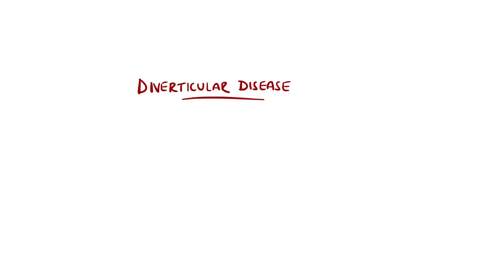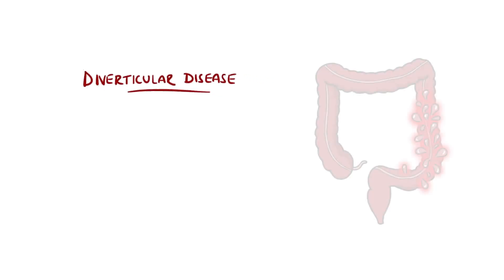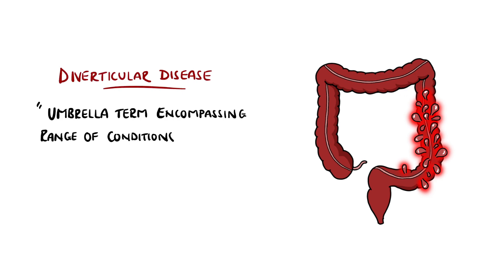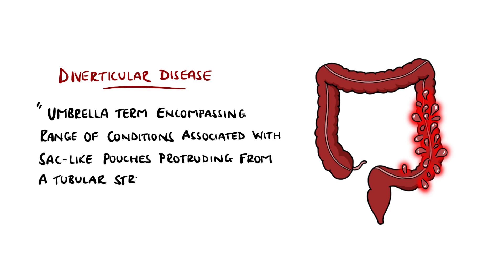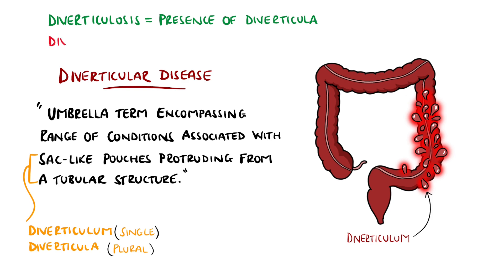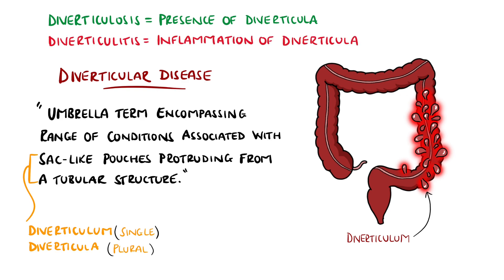Diverticular disease is an umbrella term used to describe a spectrum of diseases associated with the presence of diverticula, defined as sack-like pouches that protrude from a tubular structure. Diverticulosis refers to the presence of diverticula, and diverticulitis means inflammation of the diverticula that may be with or without infection.